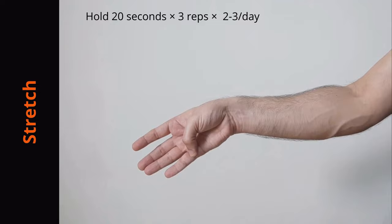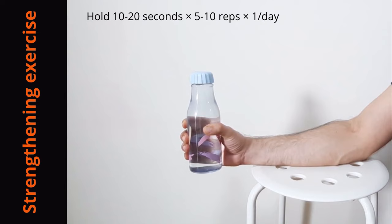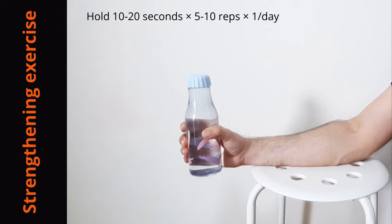Next is strengthening exercise. With forearm supported, hold a half or one kilogram dumbbell or a bottle of water, keeping the wrist in neutral position.